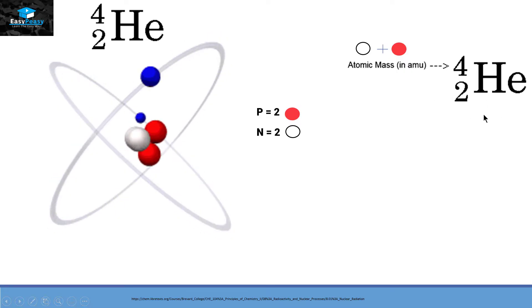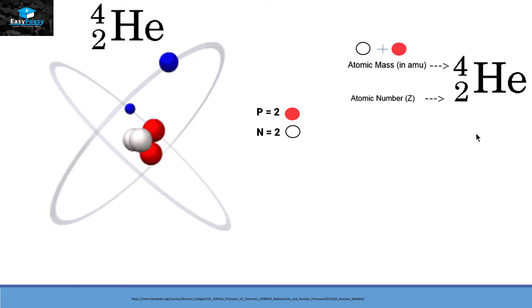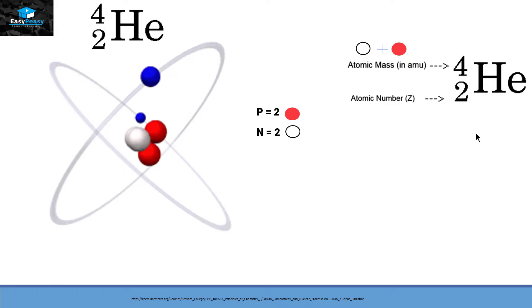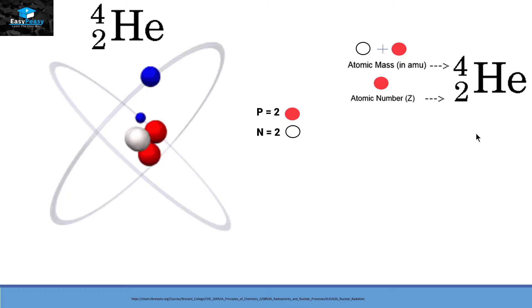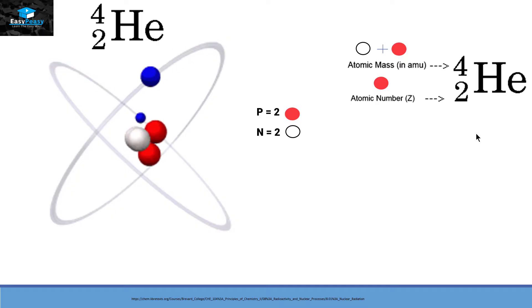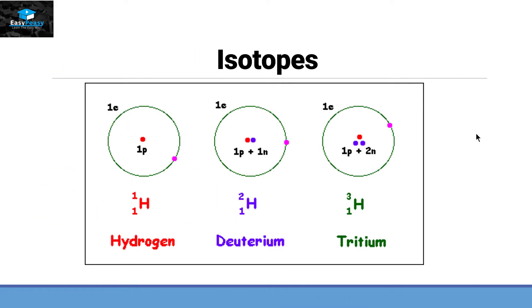The 2 at the bottom is the atomic number of Helium. The atomic number means the number of protons present in that element. The number of protons always remains the same within an element — if they change, they change the element as well. But the number of neutrons can change within one element, and if they change, that will be called isotopes.